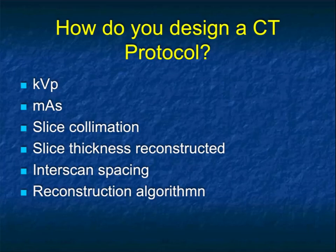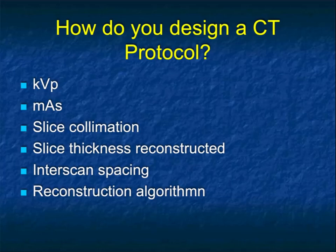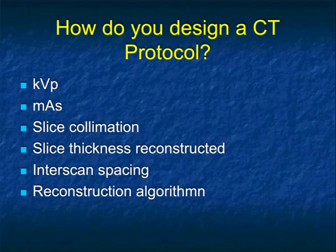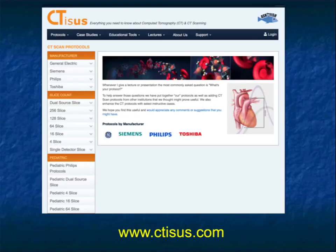From the CT protocol side, we want to look at KVP and MAS, getting the lowest dose possible while still getting a great study. For collimation, since we're doing 3D, we want thin sections closely spaced. The algorithm depends on what you're doing — lung, bone, or soft tissue — and in many cases you'll need two or three algorithms. This does not increase the patient dose; it increases post-processing time. But with newer scanners where images are reconstructed quickly, you can put that in your protocol and it will be done automatically.